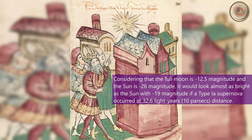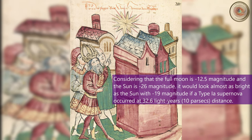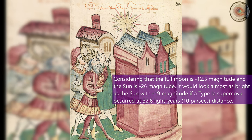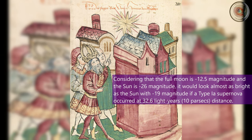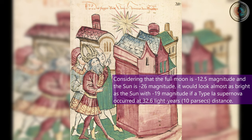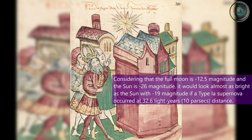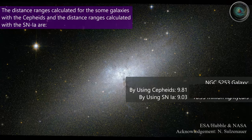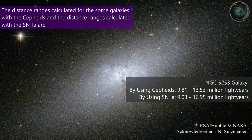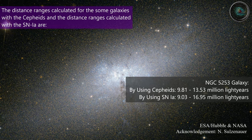Considering that the full moon is minus 12.5 magnitude and the Sun is minus 26 magnitude, a Type 1A supernova at 32.6 light-years distance would look almost as bright as the Sun with its minus 19 magnitude. The distance range calculated for some galaxies with Cepheids is also calculated with SN1A.